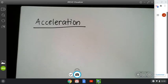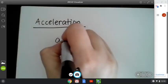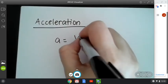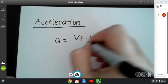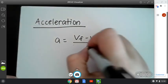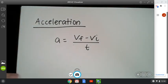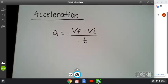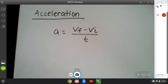So acceleration is going to be a equals vf minus vi over t. Well, you already know what some of these things mean, because we just went over them. So we know what v stands for. V is velocity. But what does the f and the i stand for?